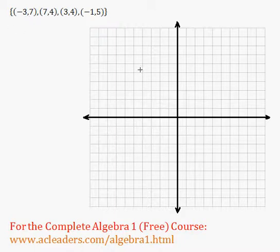To get started I'll just plot these points, starting with negative 3 and positive 7. Here we have 7 and 4. Did I get that right? 1, 2, 3, 4, 5, 6. Yeah, I did.